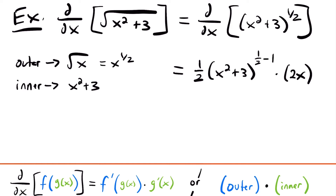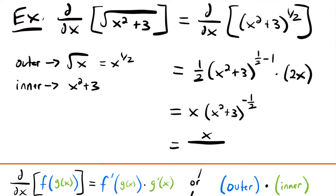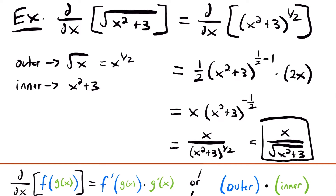Simplifying, the one-half and the 2 cancel to give 1, so we have x times x squared plus 3 to the negative one-half power. Moving the quantity with the negative exponent to the denominator gives x divided by x squared plus 3 to the one-half power, which we can rewrite as x over the square root of x squared plus 3. That is our final answer.